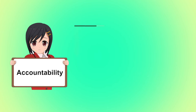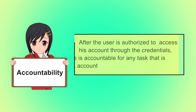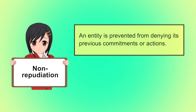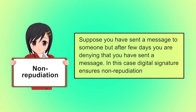Accountability focuses on ensuring that any actions taken by an entity can be traced uniquely to that entity. For example, after the user is authorized to access his account through credentials, he is accountable for any task carried out by him on his account. The last is non-repudiation. Non-repudiation is the assurance that someone cannot deny something. A legal document typically requires witnesses to signing so that the person who signs cannot deny having done so. For example, if you have sent a message to someone but later deny sending it, the digital signature ensures non-repudiation. This will be discussed in later slides.